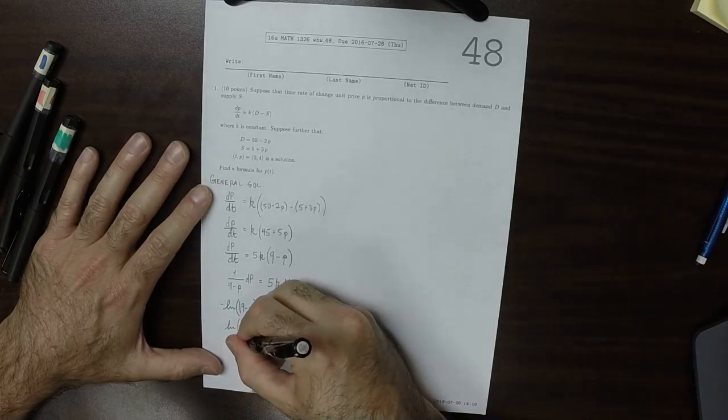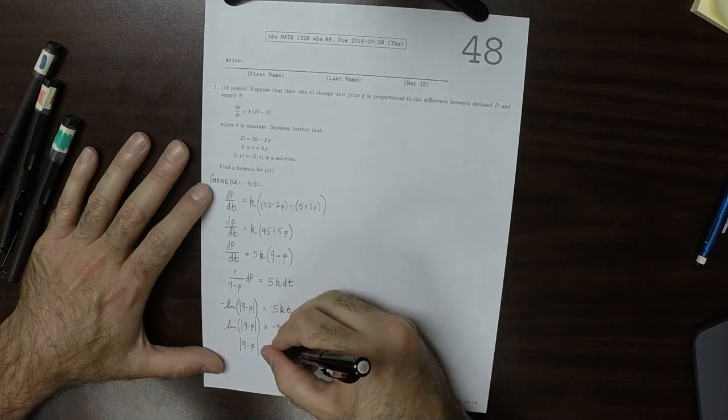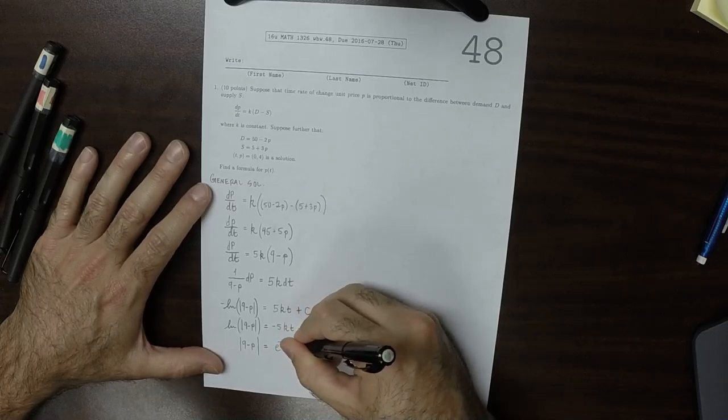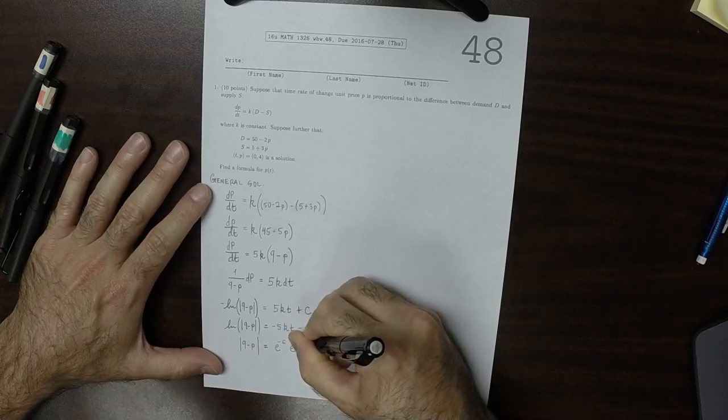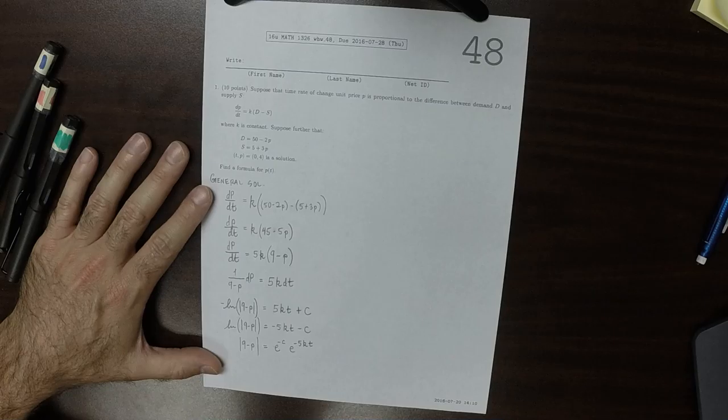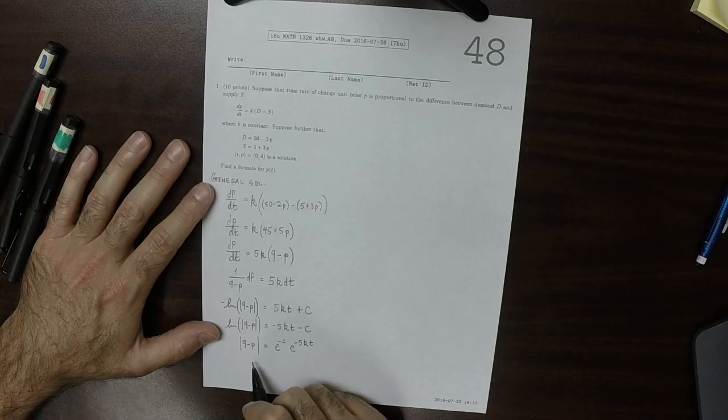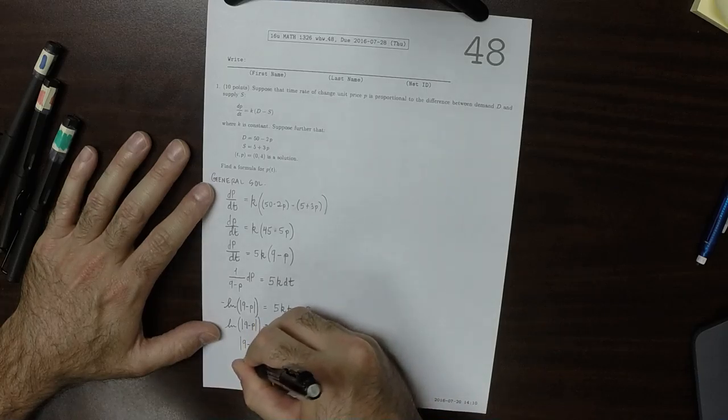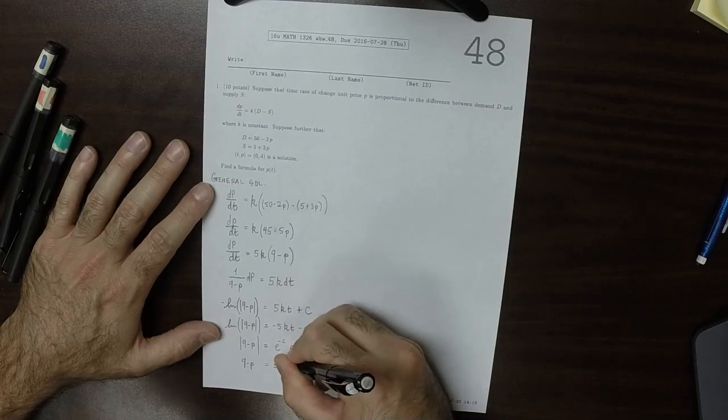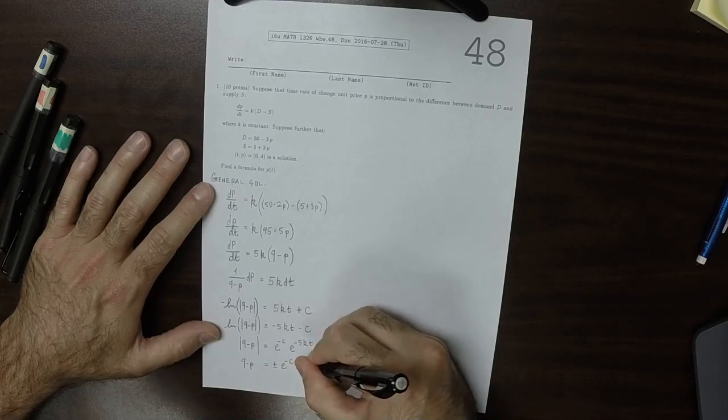So then absolute value 9 minus p is exponential negative c, exponential negative 5kt. And then 9 minus p, and we can drop the absolute value to get 9 minus p is plus or minus exponential negative c, exponential negative 5kt.